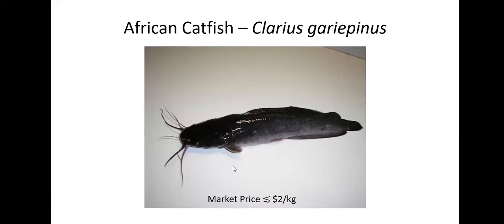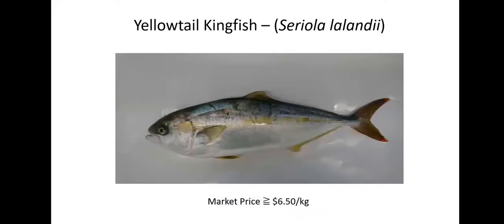There is one big difference, and that is the price — your market price. I'm not a catfish farmer, but from my reading you are looking at a market price of around $2 a kilo or less — farm gate for fresh catfish in the round. If you go to yellowtail kingfish, you are looking at a price of at least $6.50 a kilo if you are able to enter the high-value sashimi trade market, both locally and internationally. And that really is the difference between whether a recirculating aquaculture system can justify the investment or not.